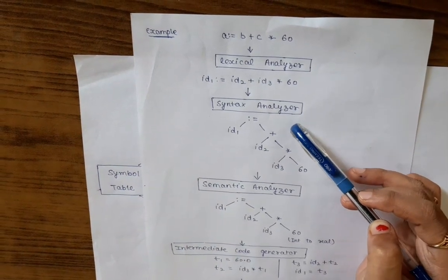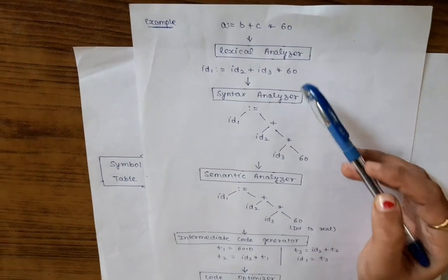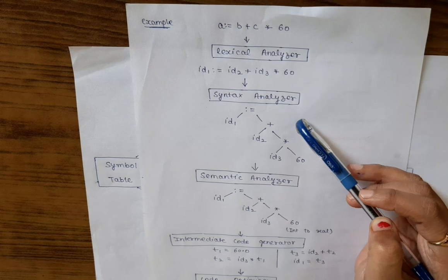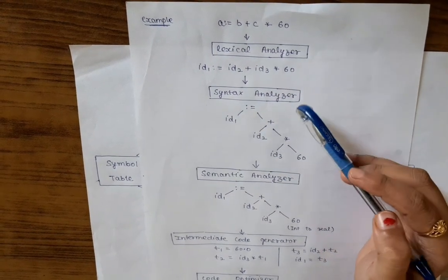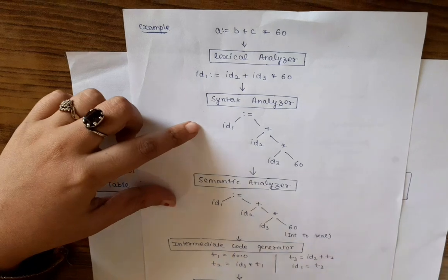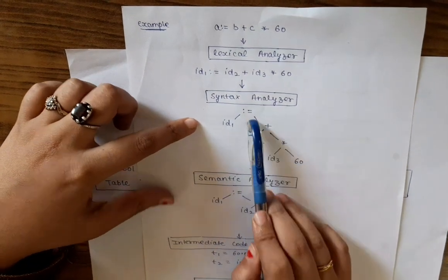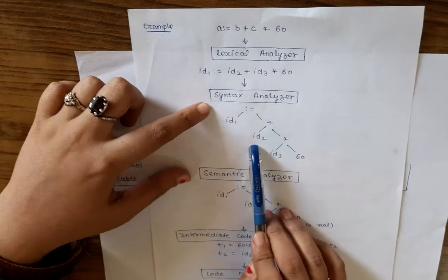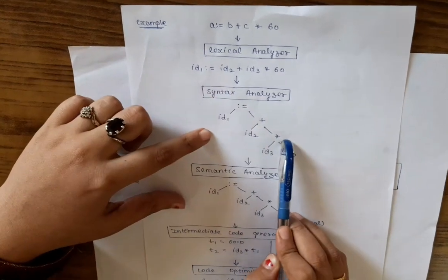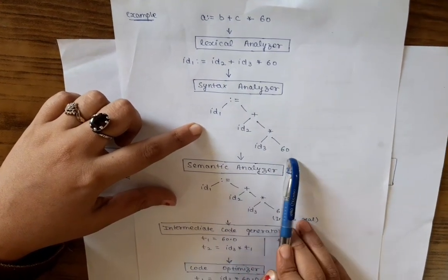Now syntax analyzer takes input from lexical analyzer, checks the correctness of the program code and produces the syntax tree. It is also called the parser. Here we make a syntax tree equals identifier 1 plus identifier 2 multiplied by identifier 3 into the 60.